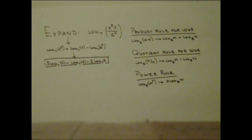For this problem, we have to expand log base 7 of x to the third y over z squared. In order to do this, there are three rules we have to know.